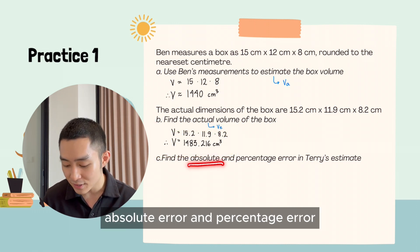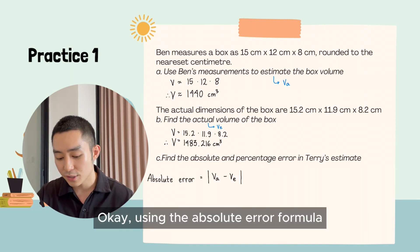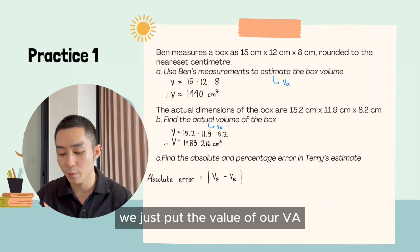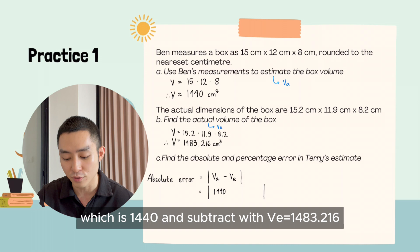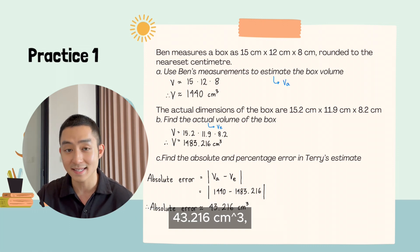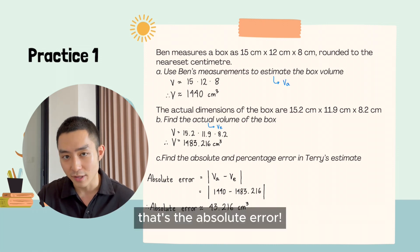Now we need to find the absolute error and percentage error. Using the absolute error formula, which is the numerator of percentage error, we just put the value of our VA, which is 1440, and subtract with VE. So using GDC, we get that the value is 43.216 centimeter cubed. That's the absolute error.